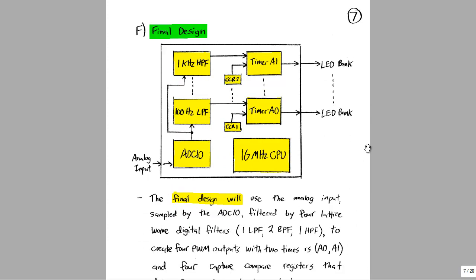Here's our final design for the digital color organ. On the left is the analog input, and on the right are the four LED banks. Only two are shown but the two in between are exactly the same, just with different filter configurations. We take an input, sample it with the ADC10, and send it to all four filters at the same time. Each sample is filtered and used to control a timer output which will pulse width modulate the LEDs.